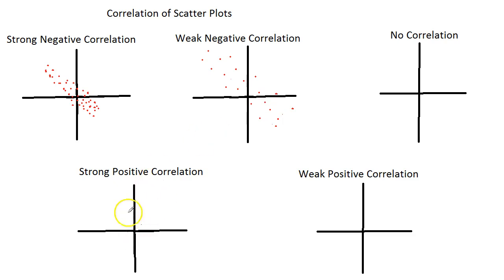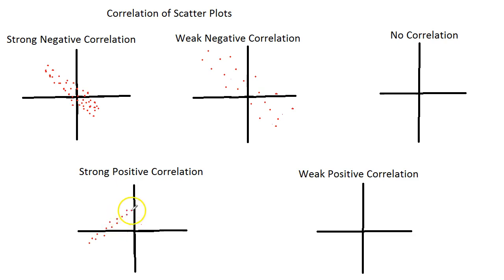And then strong positive correlation, just like the strong negative, it's a strong correlation — it means your dots are pretty close together. If you were to draw a trend line through them, it would have a positive slope, but they are close, not very spread apart.